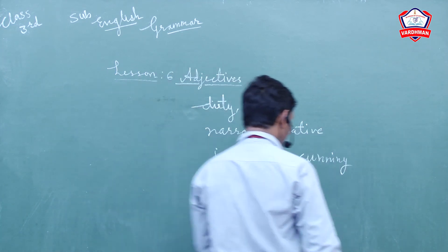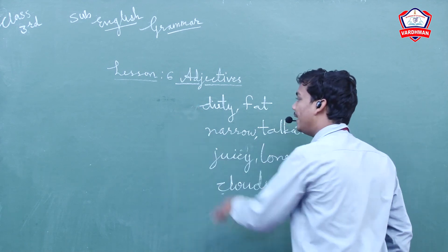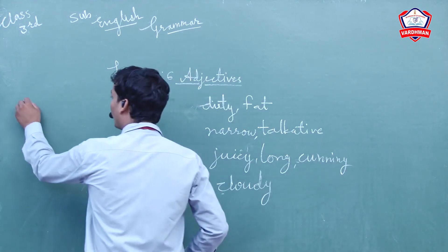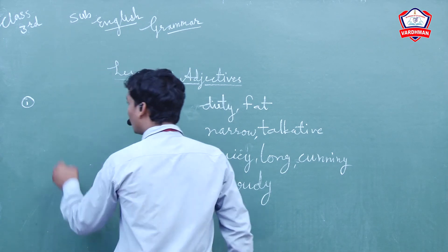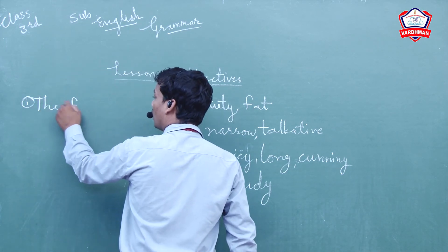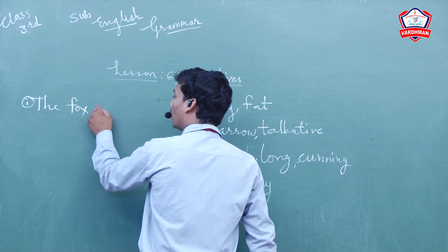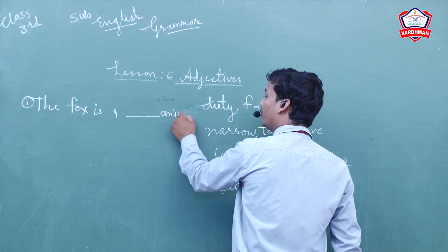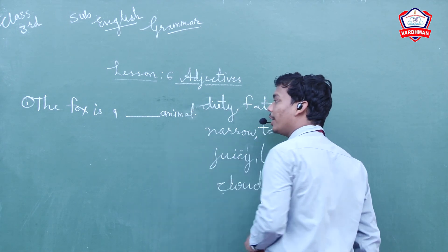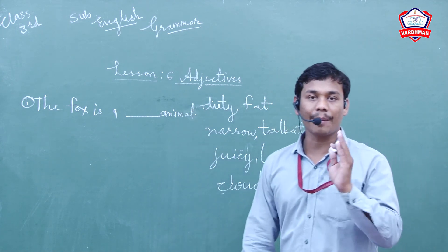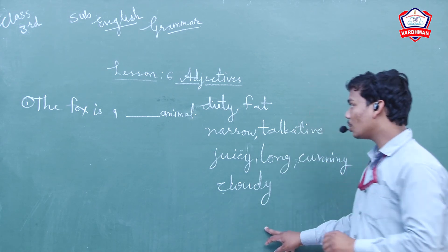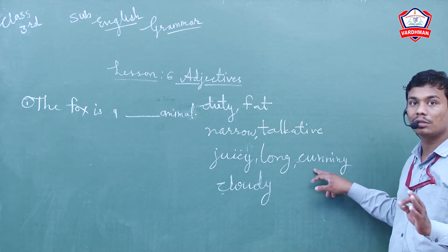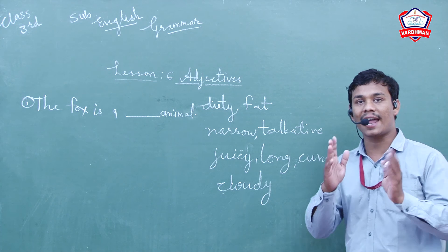These are the options, but how will you do that? Let's see. Option number one: The fox is a... The fox is an animal. As you know, the cunning fox is a clever fox. Where did you learn this? How does the animal behave? It is given that it is a cunning fox, not as cunning. The fox is by nature clever. So, it is juicy? No. It is not narrow. It is fat? No. It is not talkative.